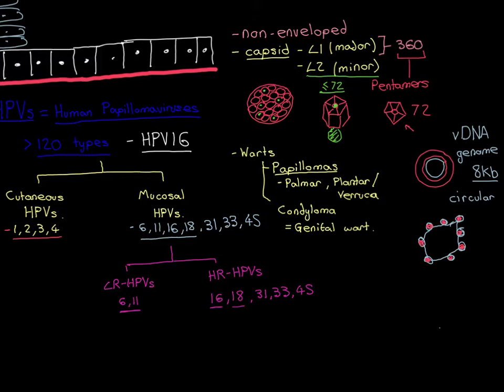That is the structure of human papillomaviruses, and this is true for all the different types. For different types, they will have slightly different genomes and slightly different genes coding for the L1 and L2 proteins, so those proteins will have slightly different amino acid sequences. However overall they still perform the same role, so we can use this single picture for all HPV types.